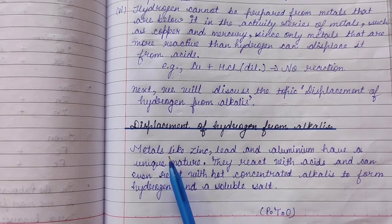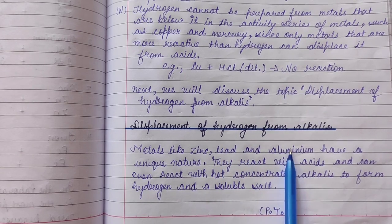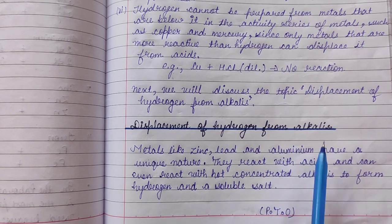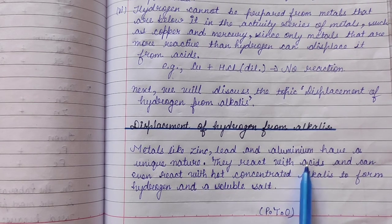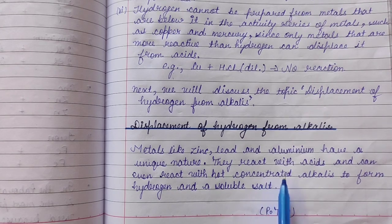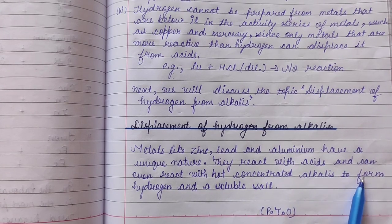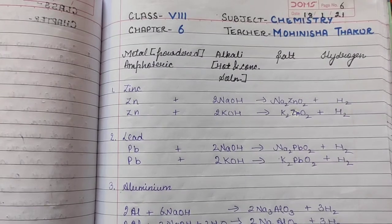Metals like zinc, lead, and aluminium have a unique nature. They react with acids and can even react with hot concentrated alkalis to form hydrogen and a soluble salt.